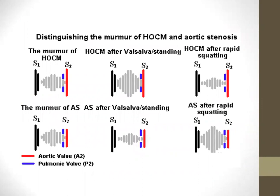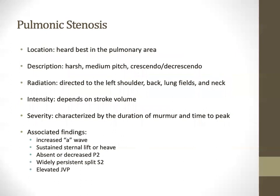Key distinguishing maneuvers between HOCM and aortic stenosis: with Valsalva or standing (decreased preload), HOCM murmur gets harsher while AS murmur softens. With rapid squatting (increased preload), HOCM murmur decreases while AS murmur increases. The reasoning: AS worsens with increased flow across the fixed obstruction; in HOCM, increased preload enlarges the LV cavity and reduces the dynamic obstruction.